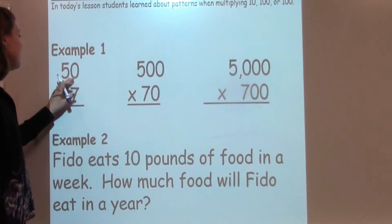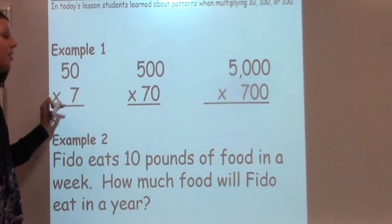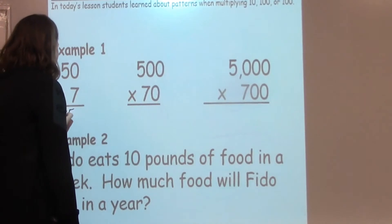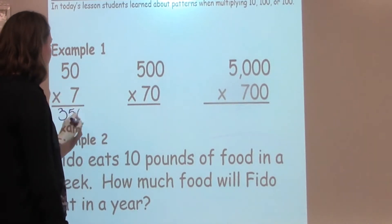Our very first question we have is 50 times 7. I know 5 times 7 is 35. When I add a 0 to this, it becomes 350.